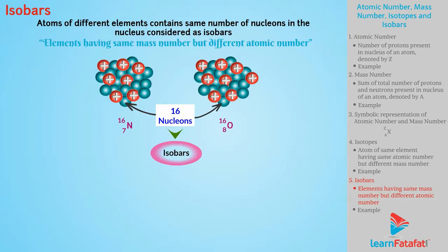Isobars can be defined as elements having same mass number but different atomic number.